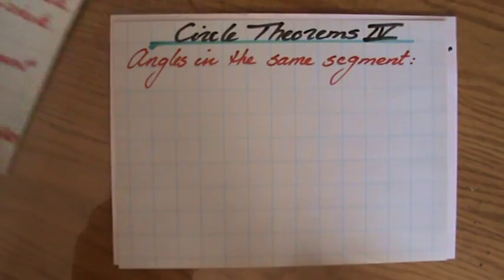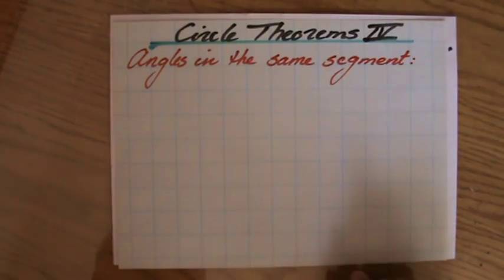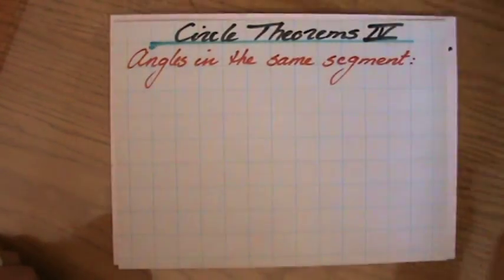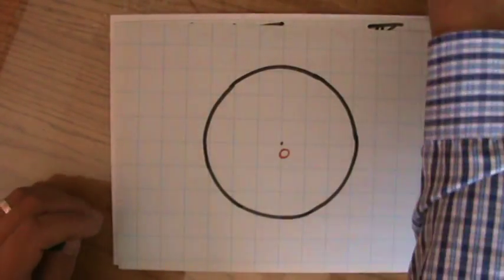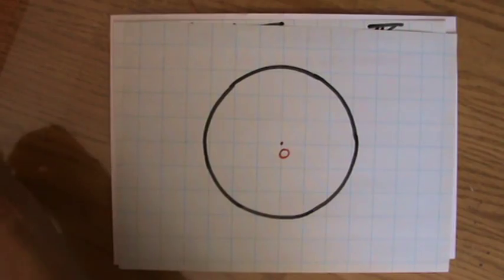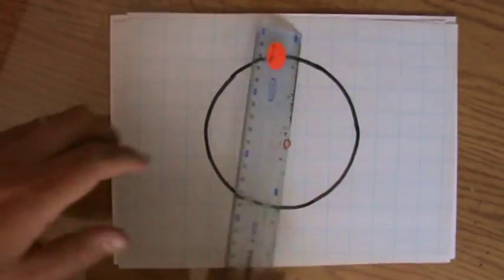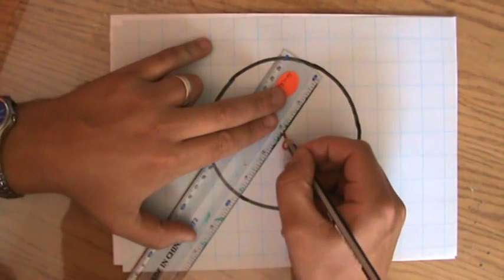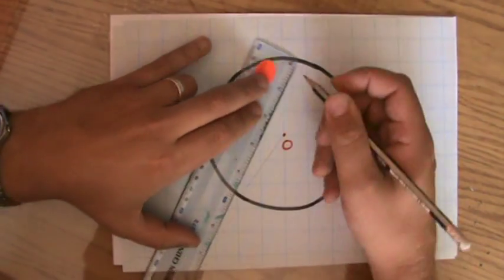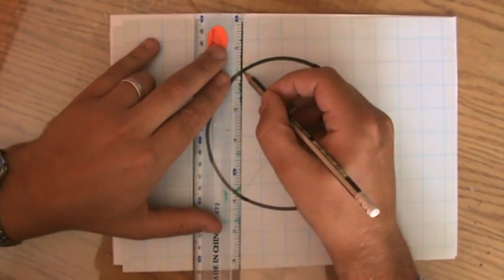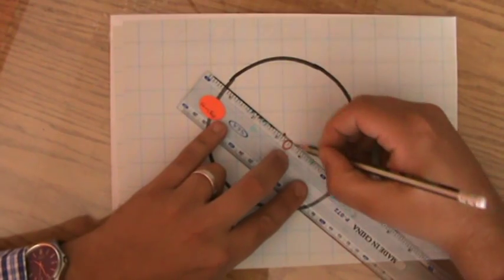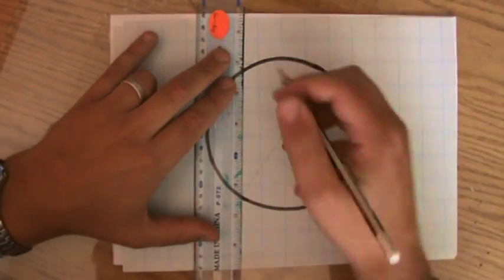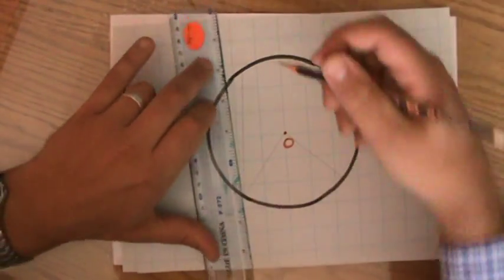You need to have that understanding of the first theorem to understand angles in the same segment. What I'm going to do now is use a pencil to create angles at the center of a circle. Why with a pencil? Because I'm going to erase some of it in the middle in a minute.